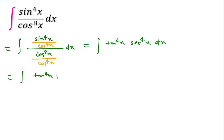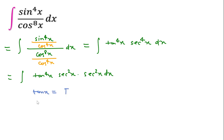We can write tan 4x · sec²x · sec²x dx. Here sec 4x can be written as sec²x form, and if we consider tan x equal to t and differentiate this, then we can write sec²x dx equal to dt.